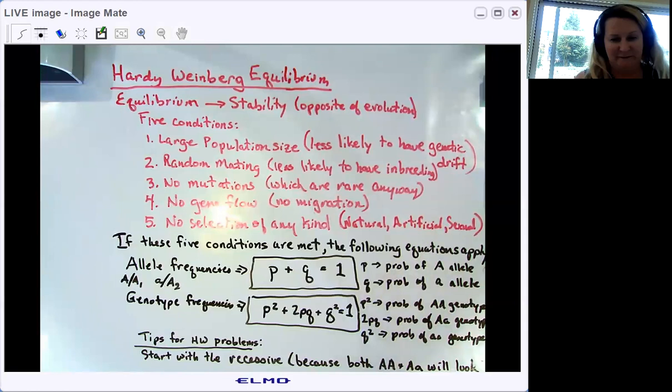Let's skip to Q squared. Q squared, by the same logic, is your probability of getting two copies of the recessive allele. 2PQ is your probability of getting the heterozygous genotype. And you have to have a two in front of that. And here's why.